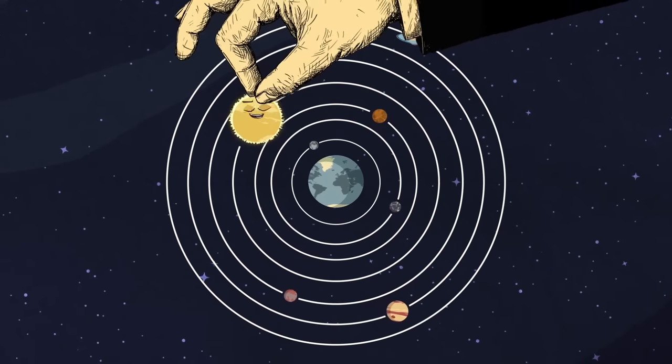It takes 12 Earth years for me to orbit the sun, making one Jovian year a really long run. I'm 89,000 miles wide — so big you could fit 1,000 Earths inside me. I've got a giant red spot, a raging storm that scientists think formed about 400 years ago. Hydrogen and helium make up most of my atmosphere — I am a gas giant.